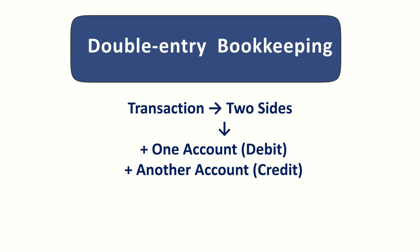Every transaction in business has two sides. In accounting, we record both sides so that our books always stay in balance. This method is called double-entry bookkeeping because each transaction is entered twice — once as a debit and once as a credit.